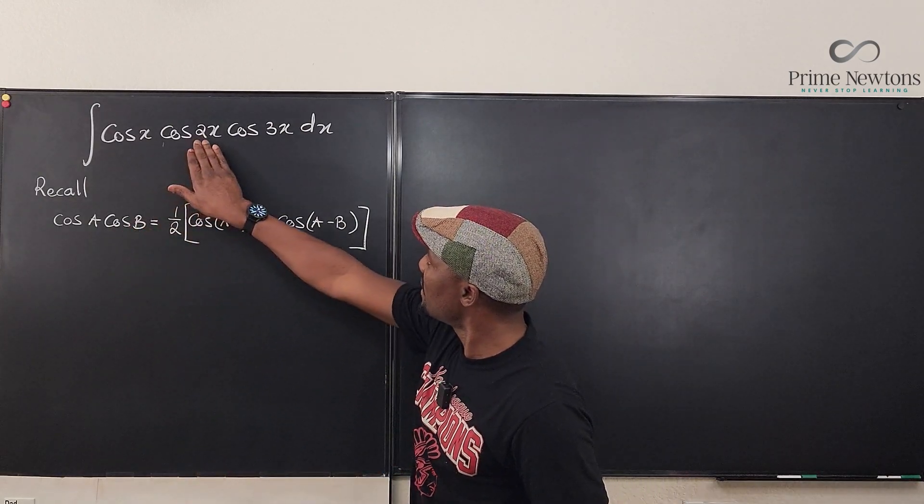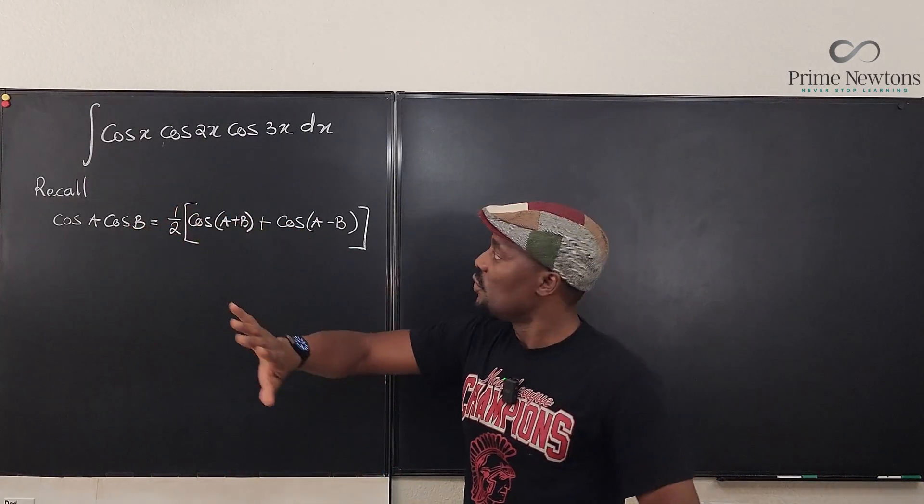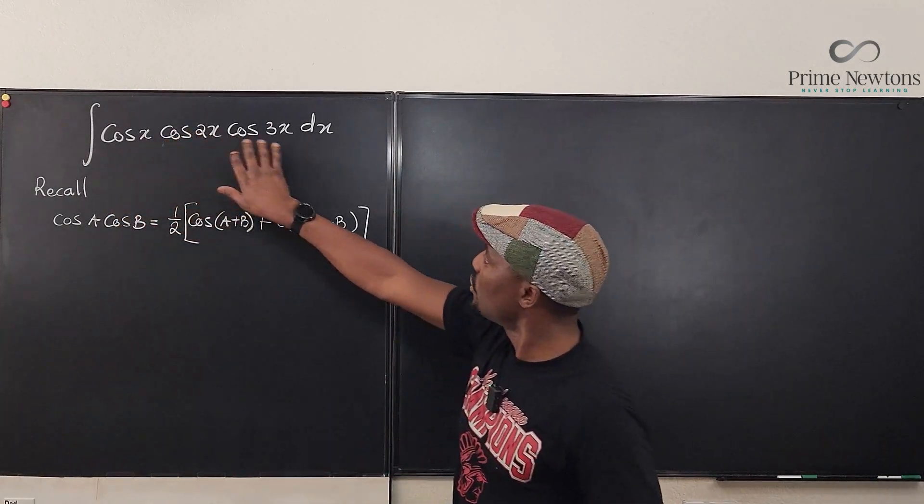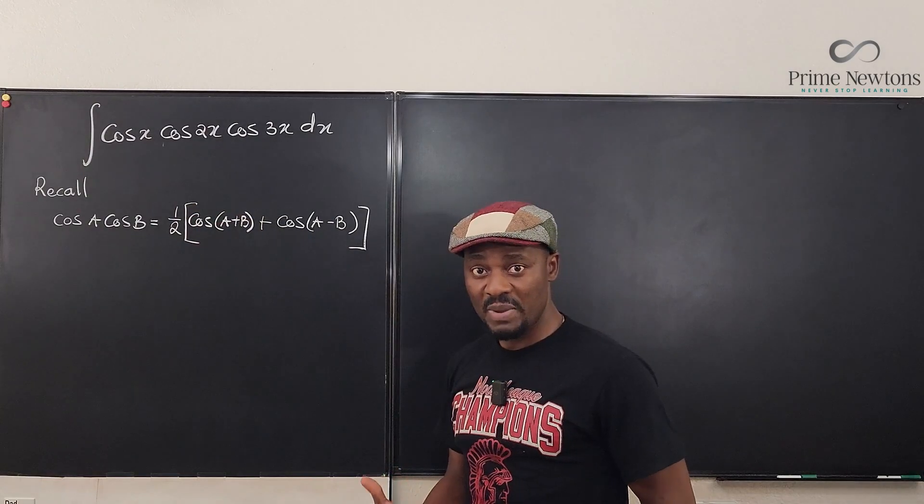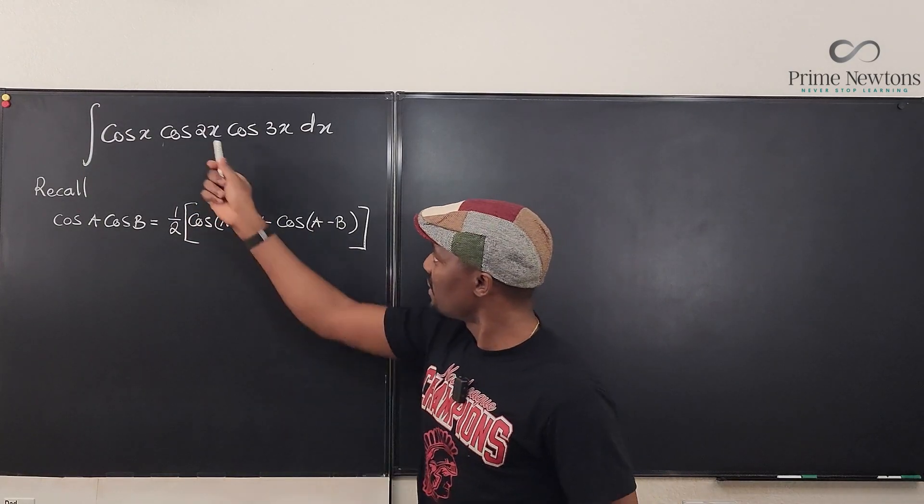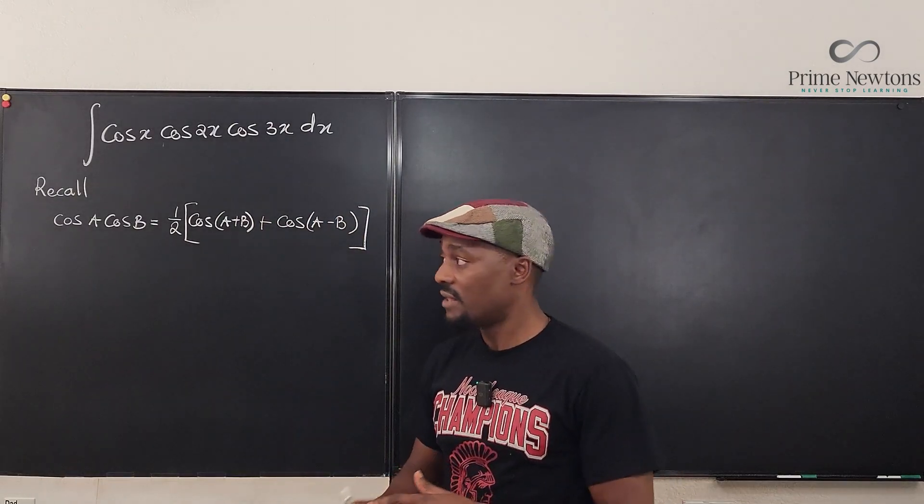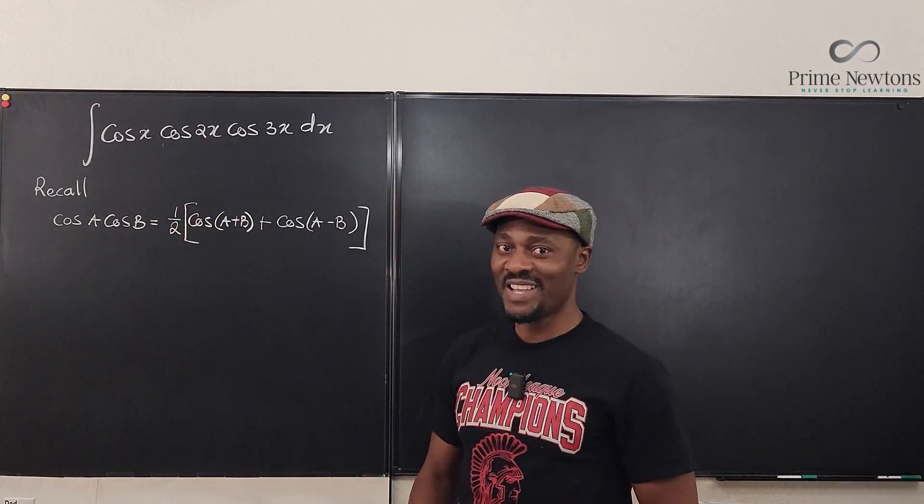So we're going to convert this product. Well, now you can choose the two small ones. You can choose the two big ones. I like to do the big ones first. So I would rather take cosine 2x, cosine 3x, multiply together so I have something easy on the other side.